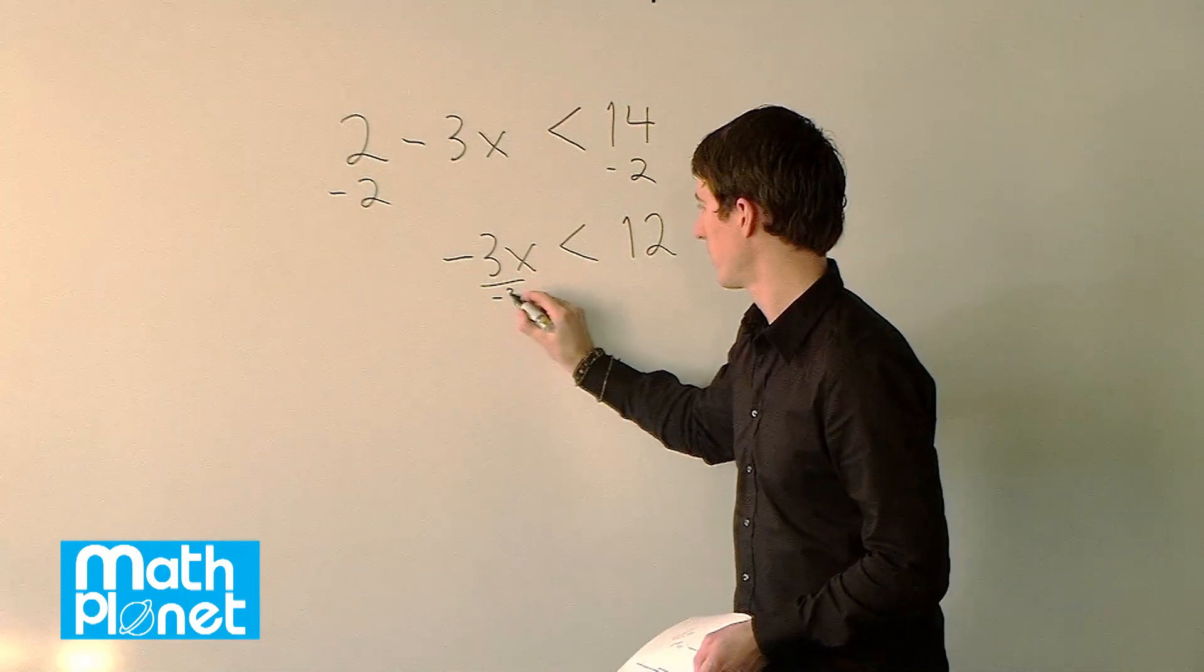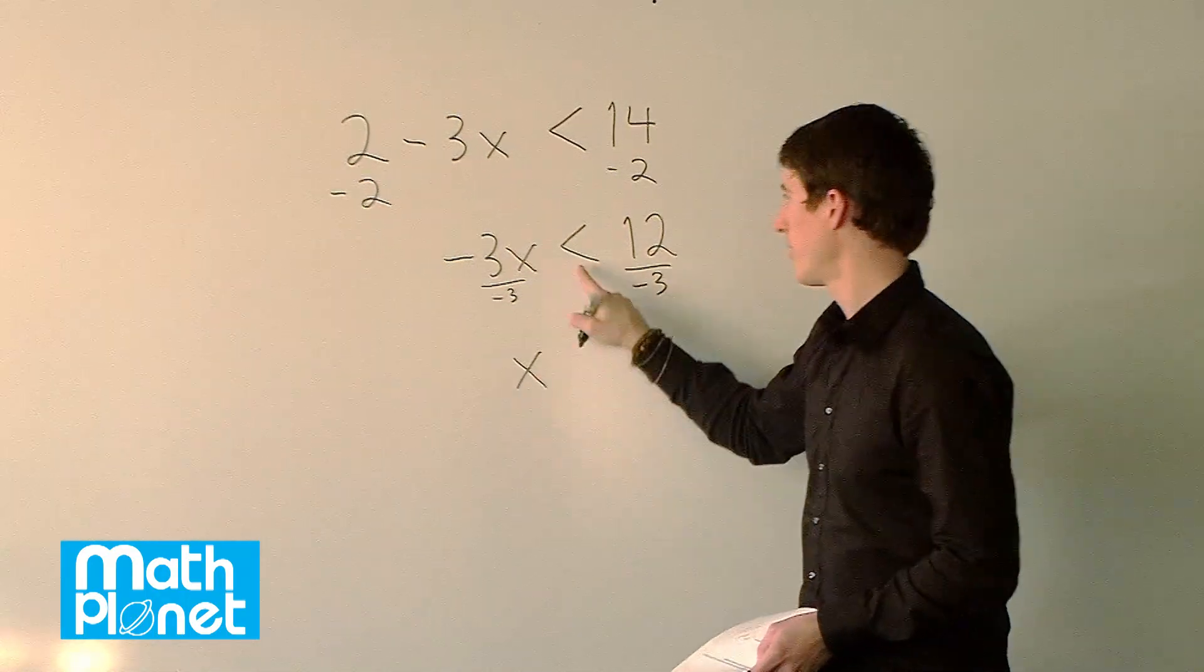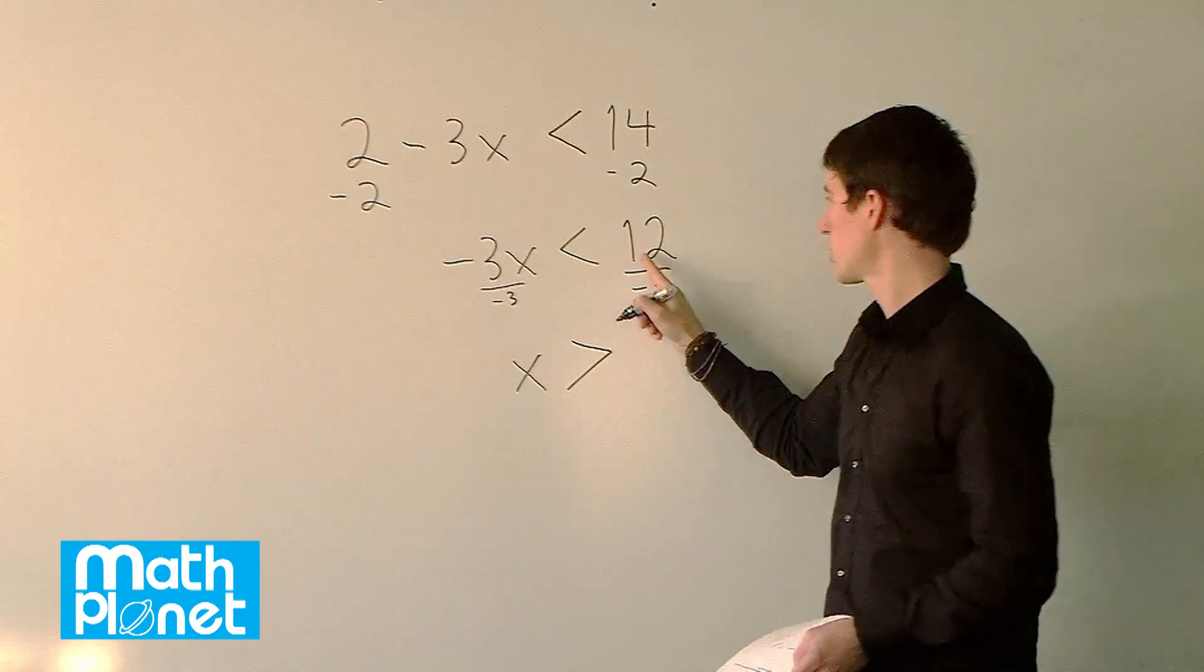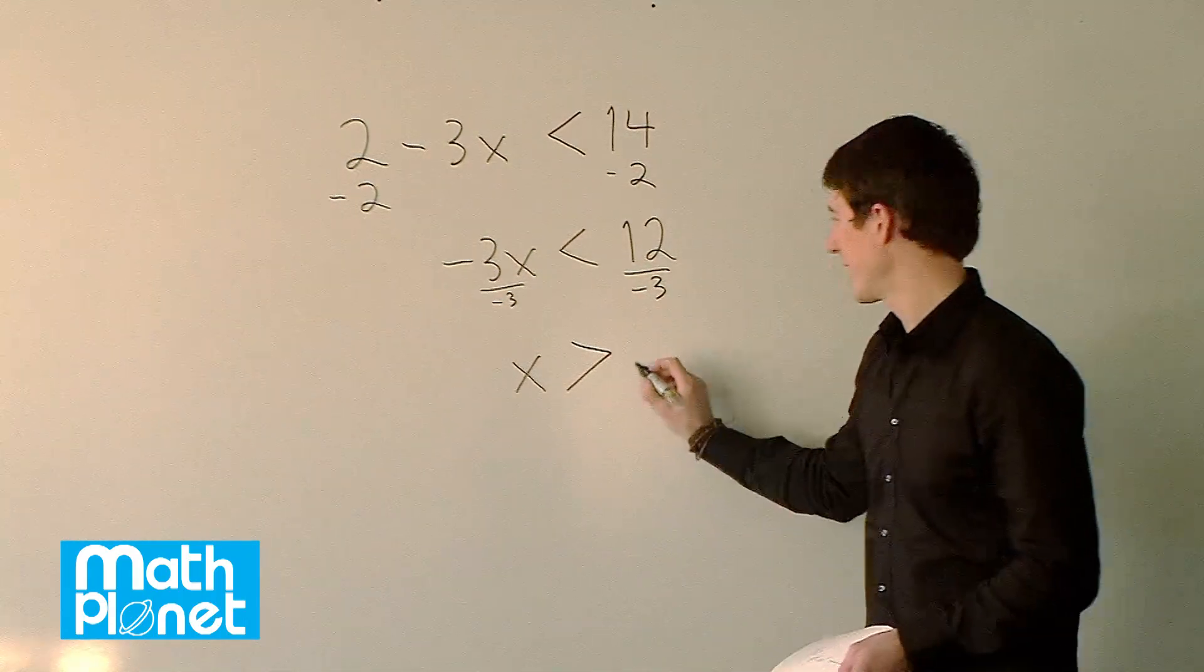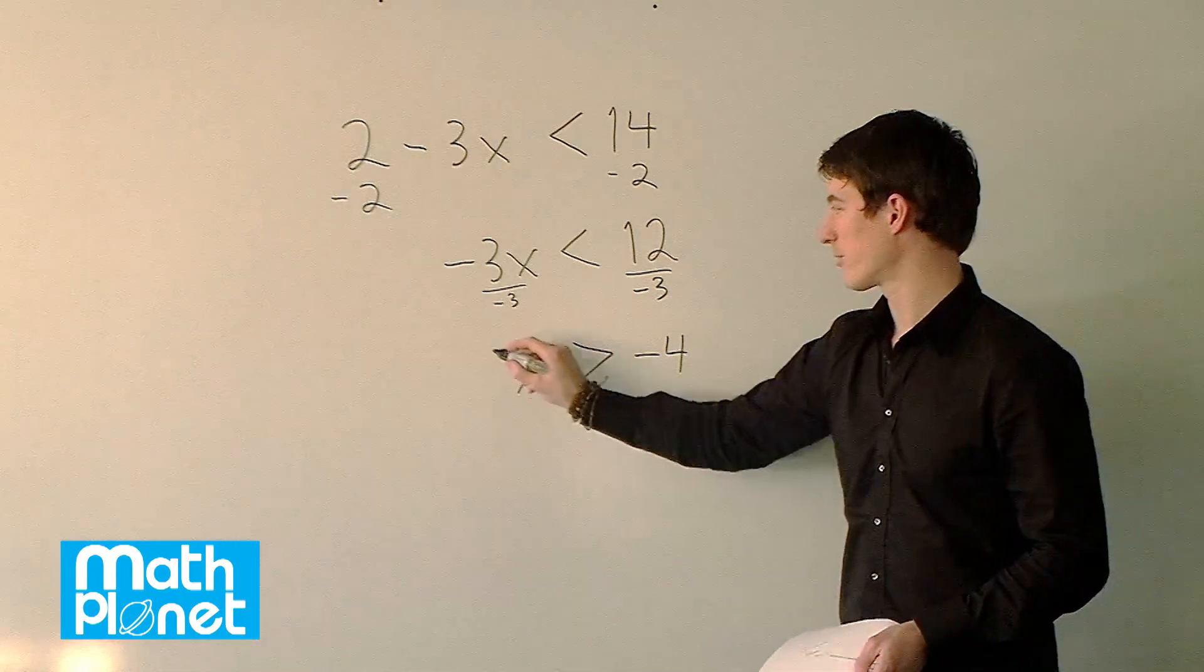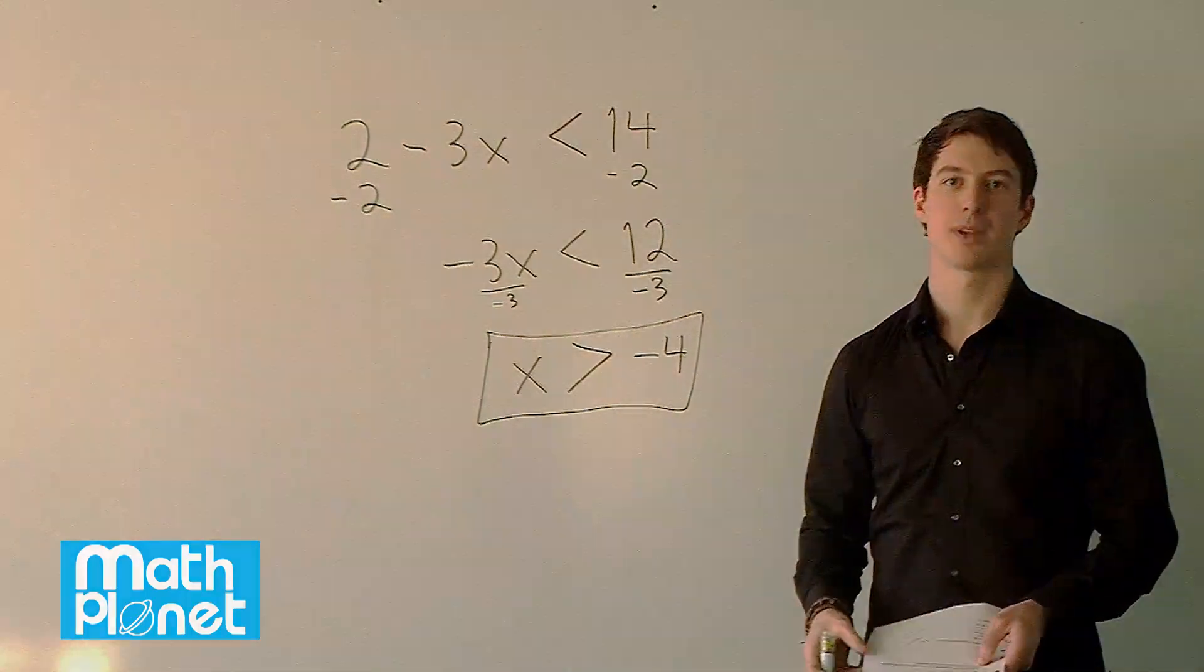So divide by negative 3, and that gives us just x. This has changed sign, so now it's x is greater than 12 divided by negative 3, which is negative 4. So x is greater than negative 4, so we have a range of solutions: everything greater than but not including negative 4.